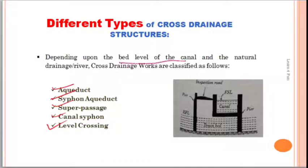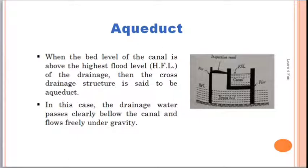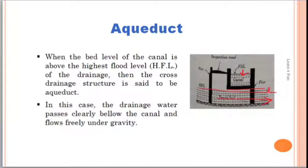Now, aqueduct. From the figure it is clearly shown that the river is running in one direction and the canal is running perpendicular to it. This is the highest flood level of the river and this is the bed level of the canal. The highest flood level of the river is below the bed level of the canal, so water in the river will be flowing freely under the canal under the action of gravity — no extra pressure will be exerted on the river water.